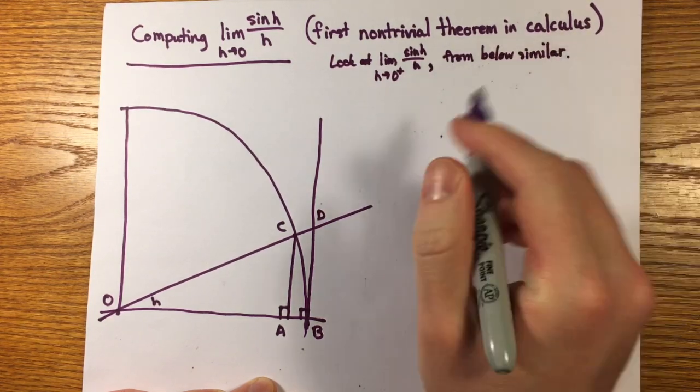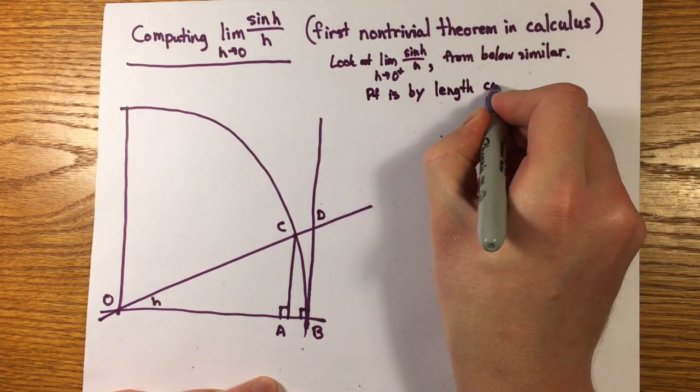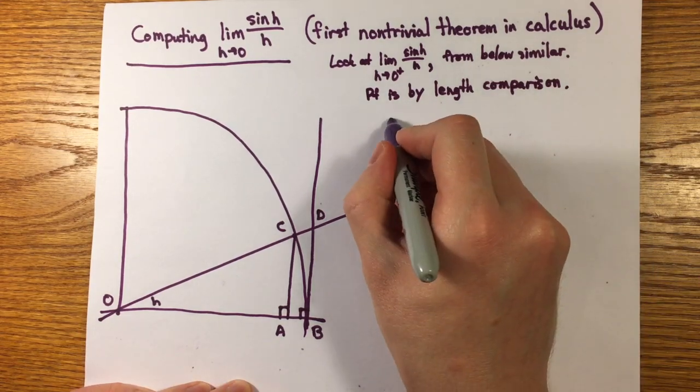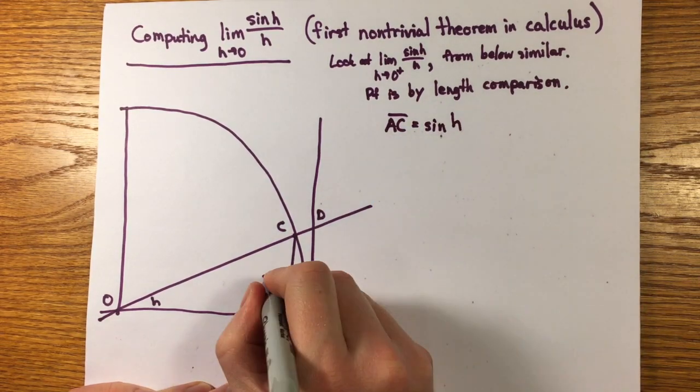We make this diagram to illustrate what's going on for angles near zero in the first quadrant, and the fourth quadrant is similar. Here, the length of the segment AC is the value sine h.